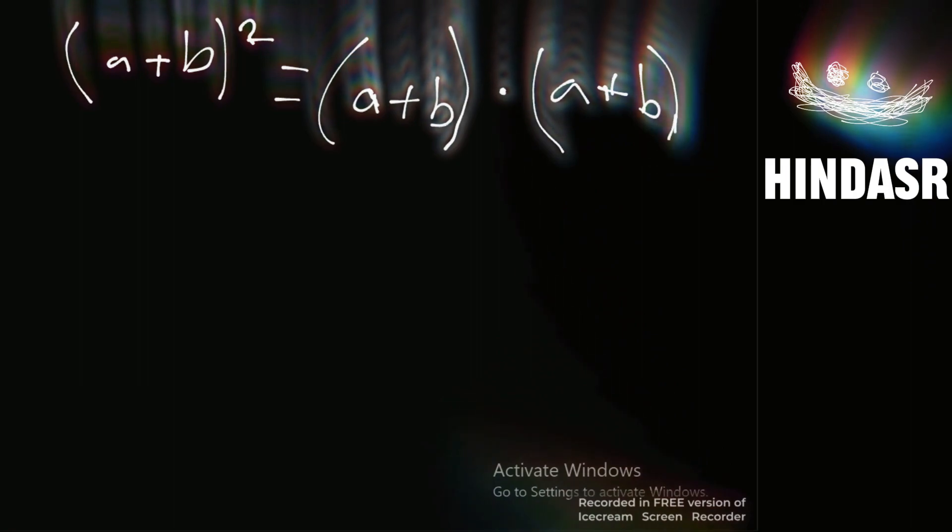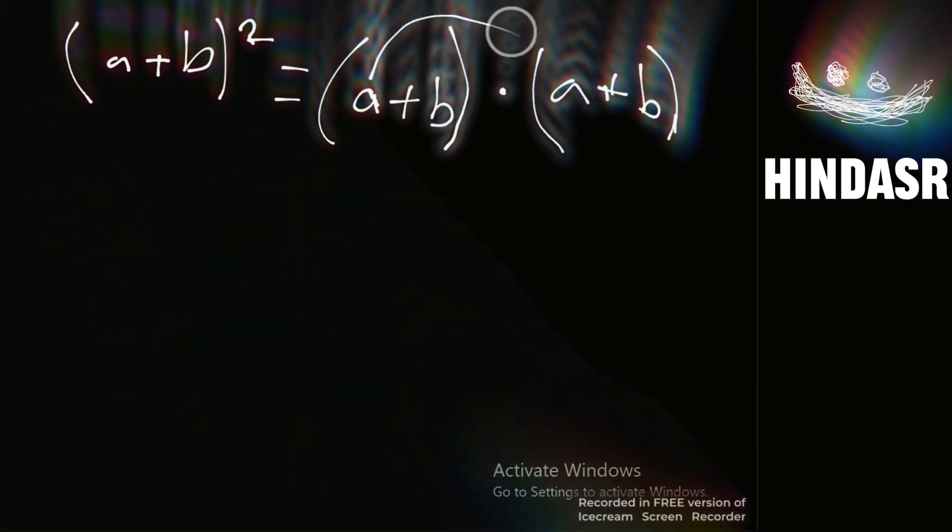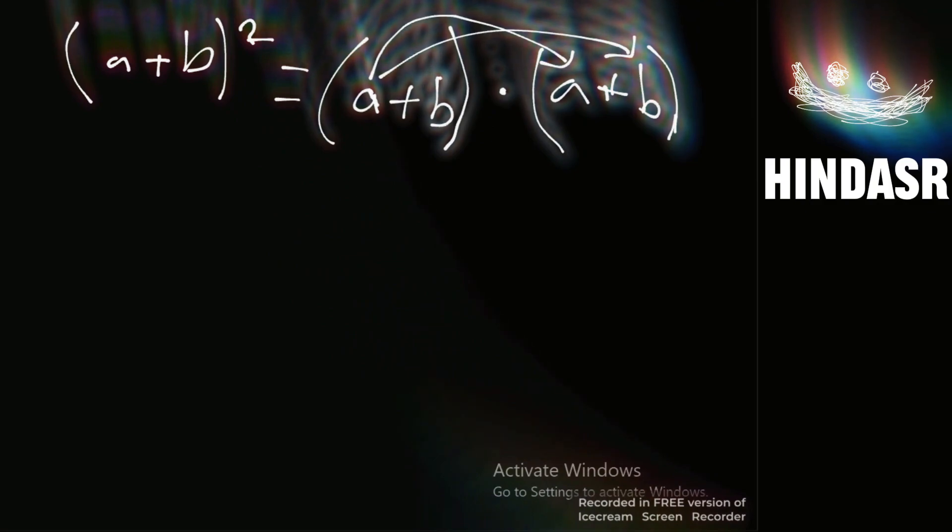So the first thing that you have to do is you just have to multiply each number. So like a times a, a times b, and then b times a, and then b times b.